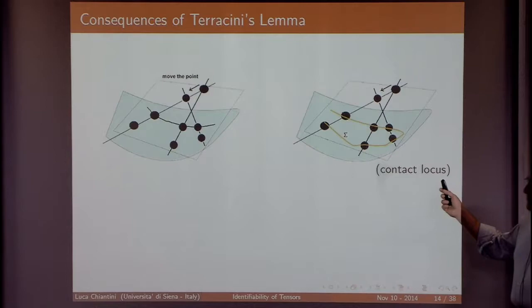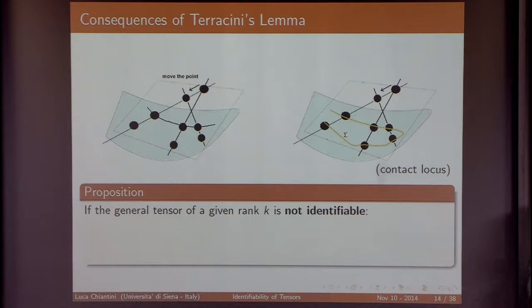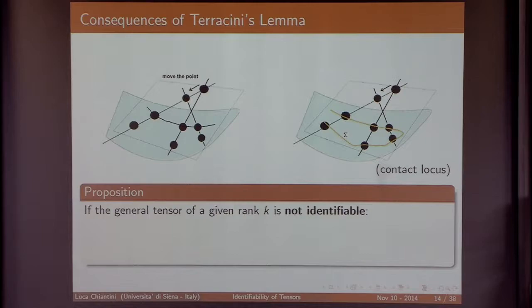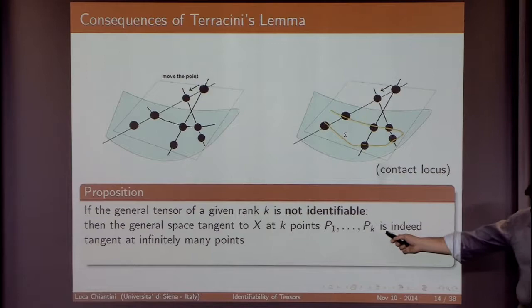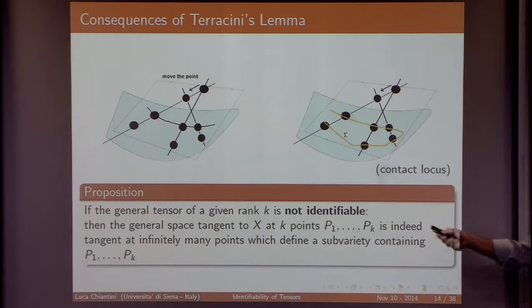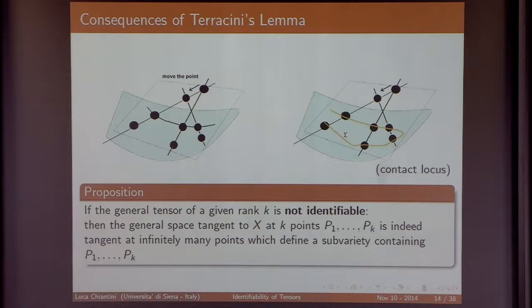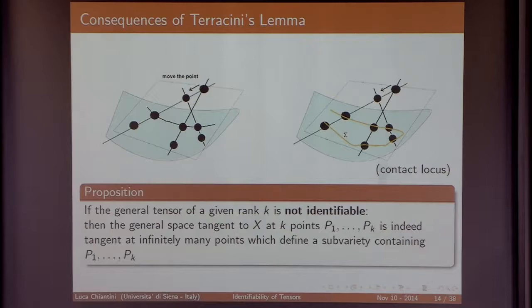This is the main tool: you get what is called a contact locus. If a general tensor of a given rank is not identifiable, then the general tangent space at points p1 through pk is tangent at infinitely many points — those in the contact locus — defining an algebraic sub-variety. The geometry of this contact locus is helpful in understanding what happens for tensors. Identifiability means a unique decomposition up to permutations.